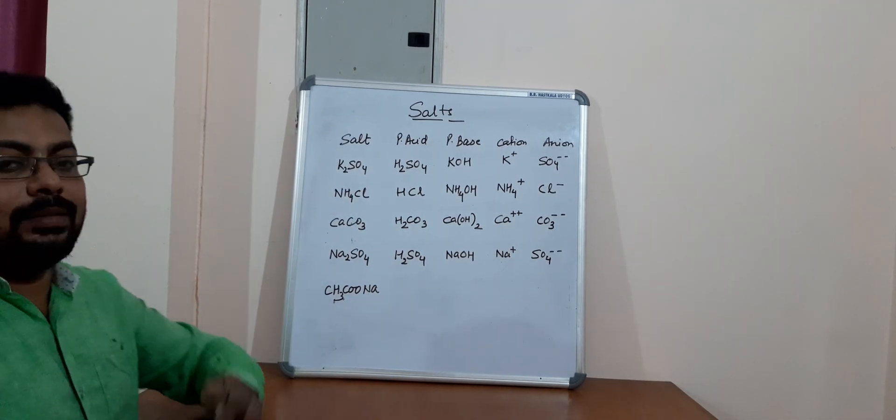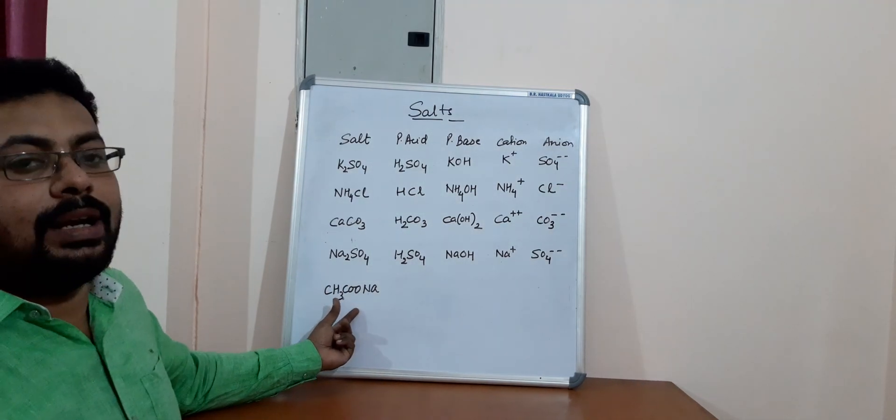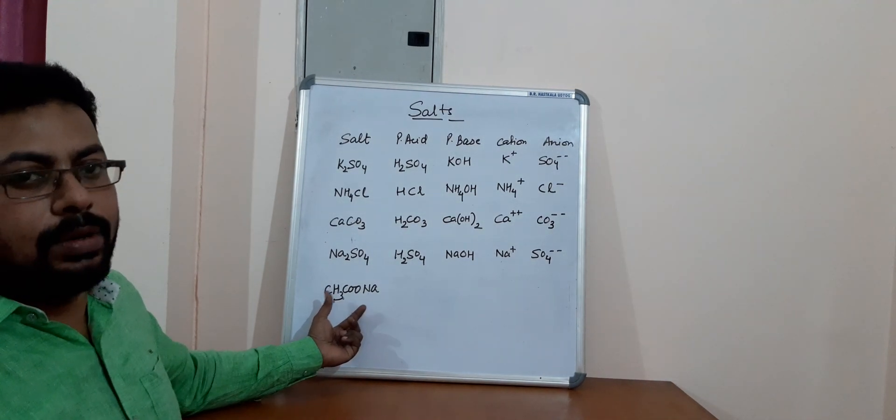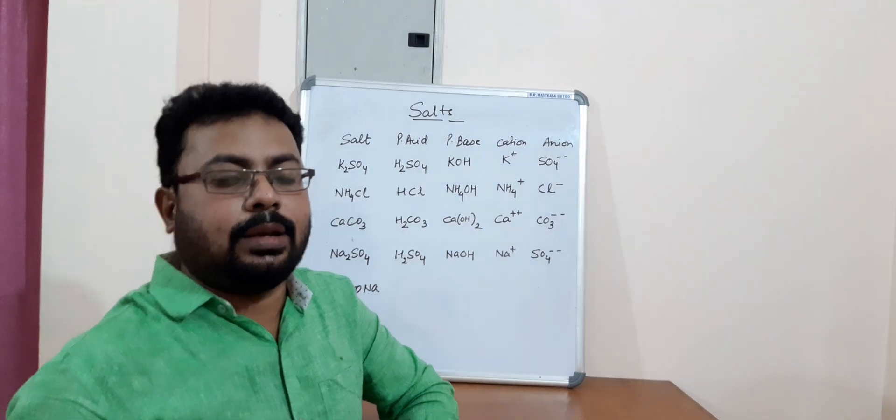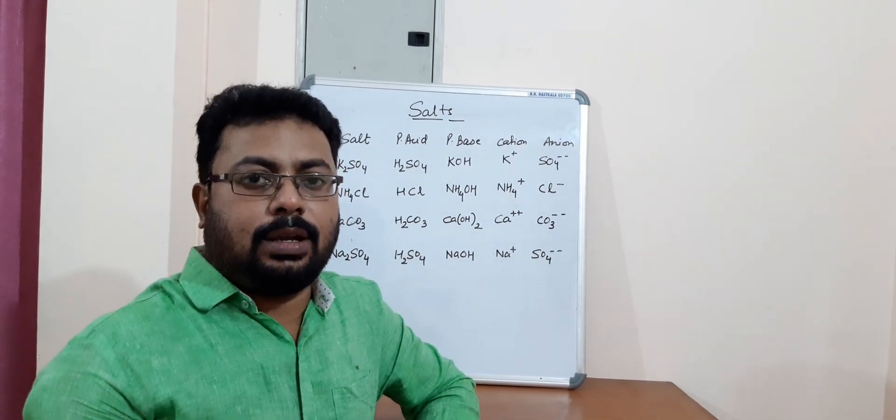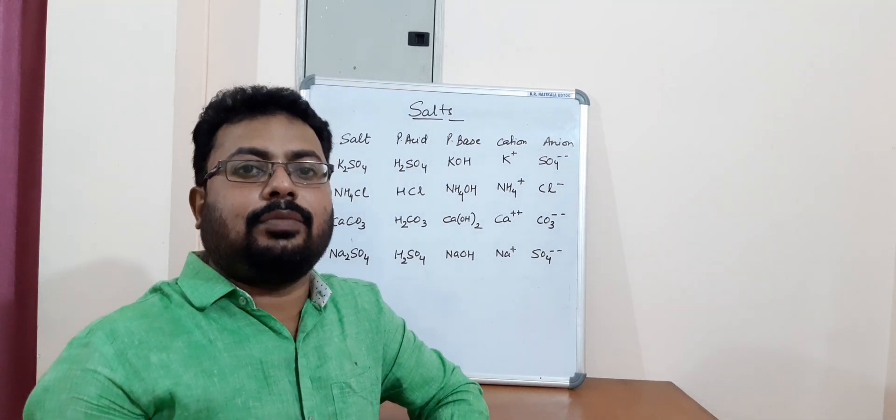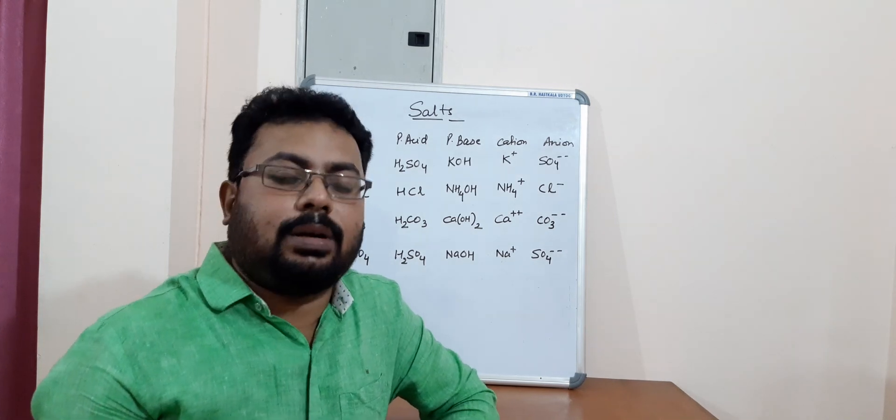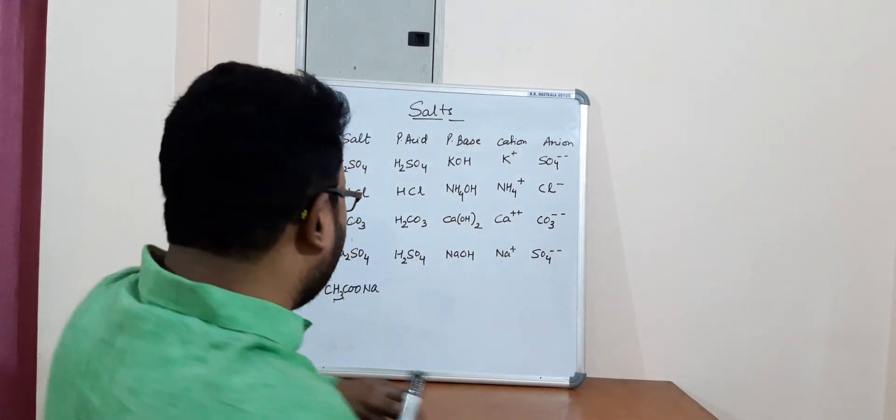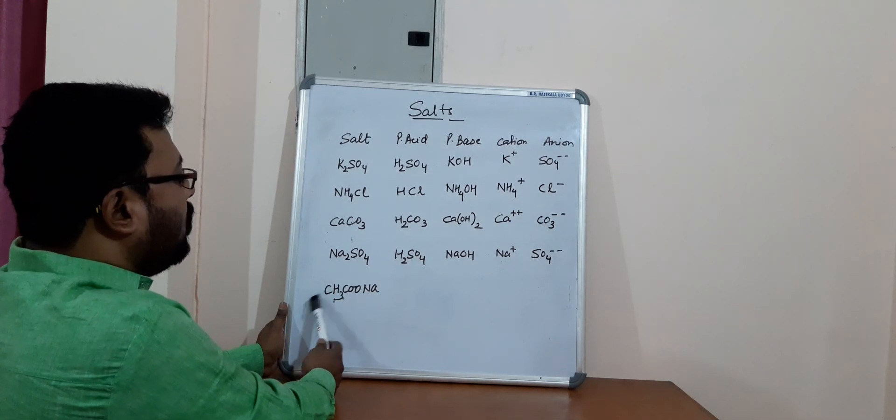Well, now here there is a twist. This is ethanoate ion, ethanoate or acetate, you can call it commonly. And you will be studying about this property in organic chemistry later on, definitely in this year in this class, when we will be talking about carbon and its compounds. So here we have sodium acetate, this ion is called acetate.